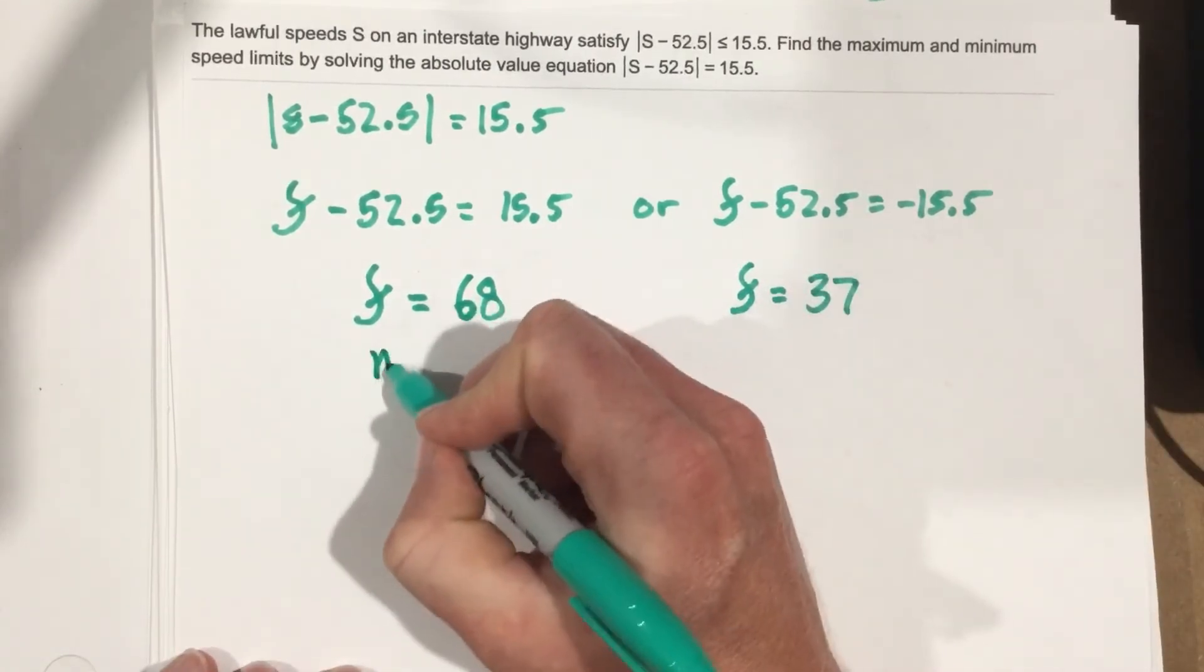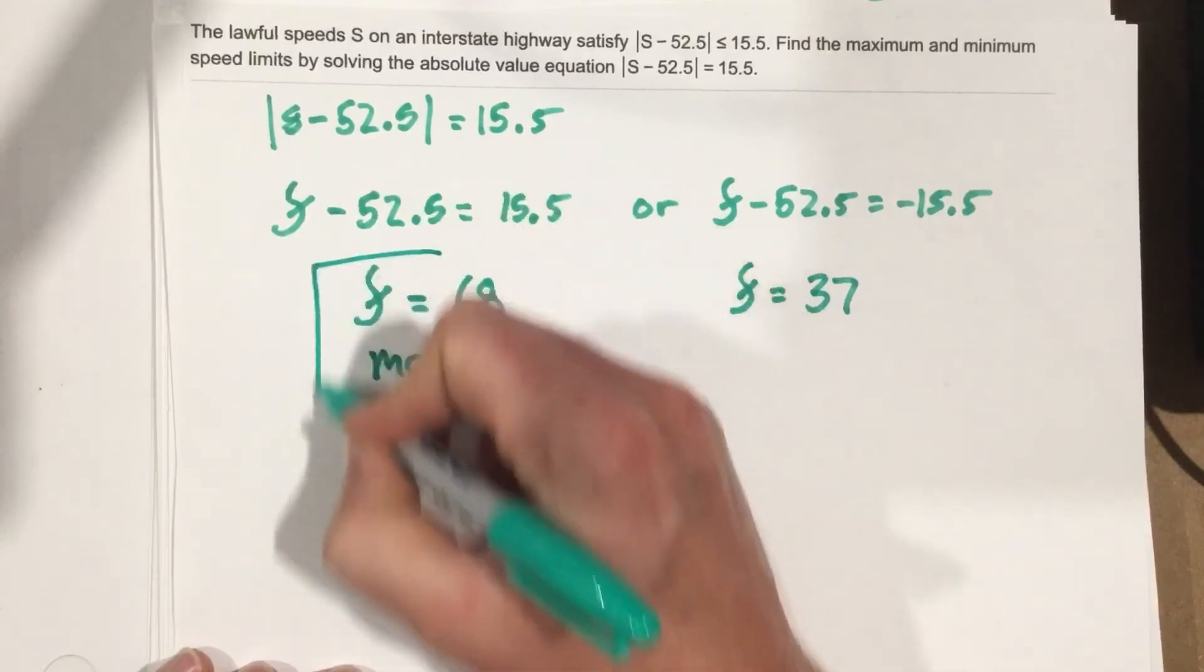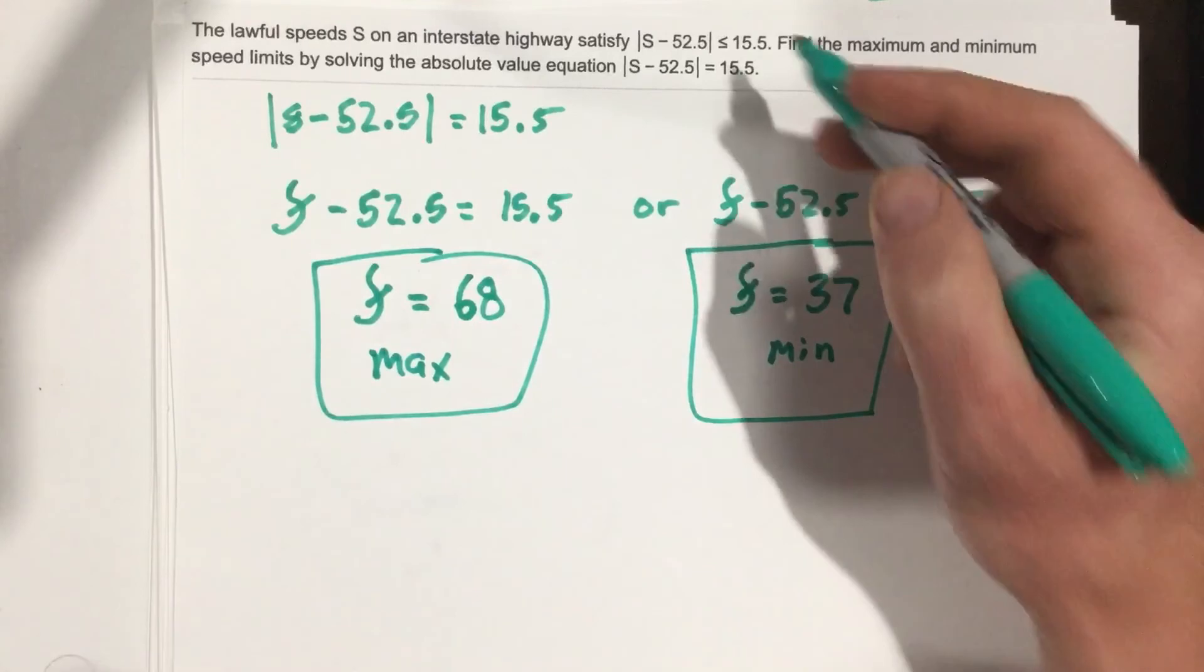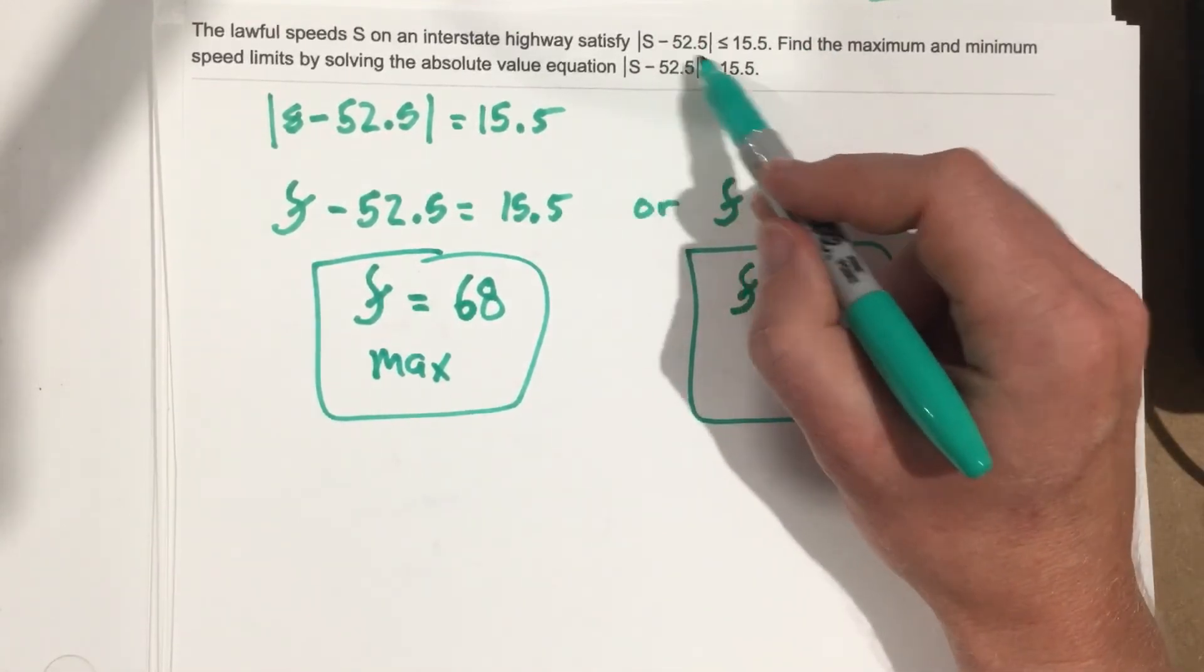So this is our max and this is the min speed limit. Now if you look at this absolute value inequality,